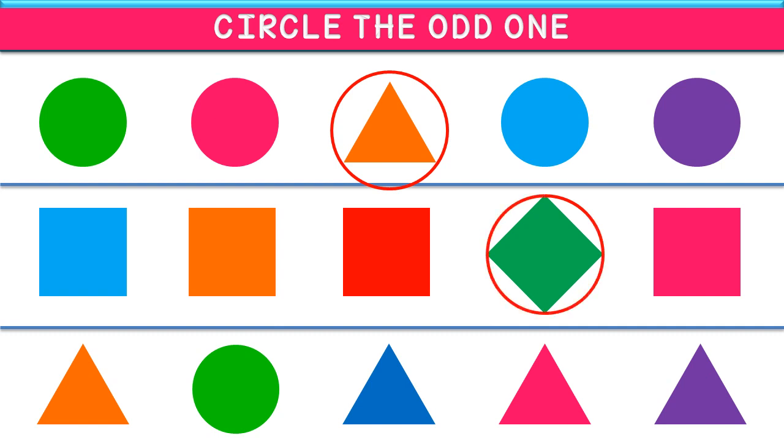Now, move to the next row. The first shape is a triangle. The second one is a circle. The third one is also a triangle. The fourth one is also a triangle. The fifth one is also a triangle.